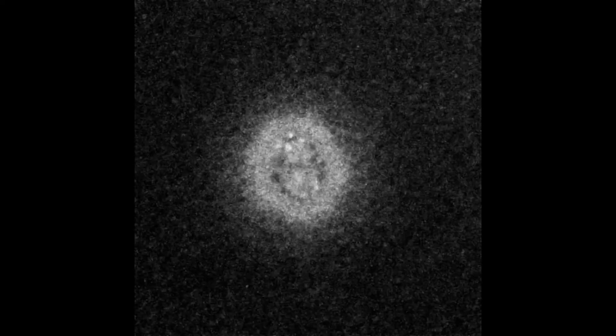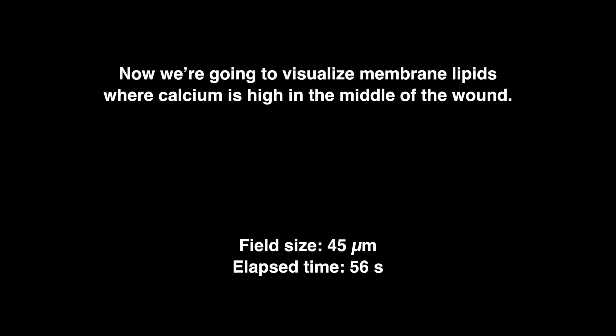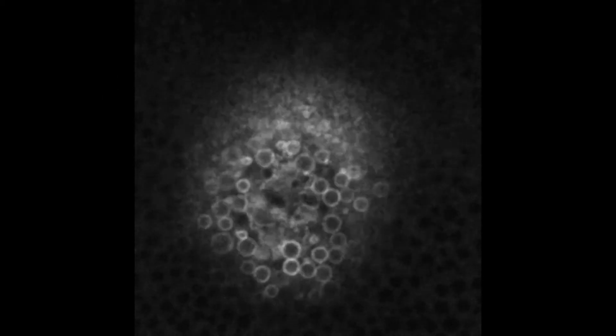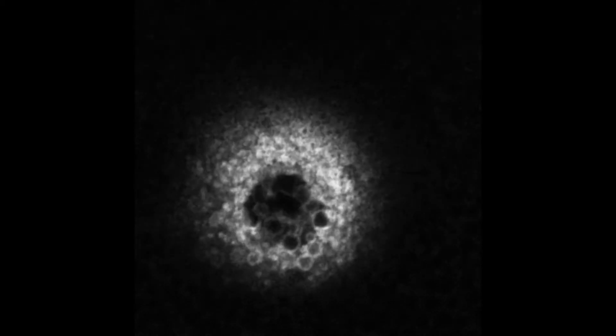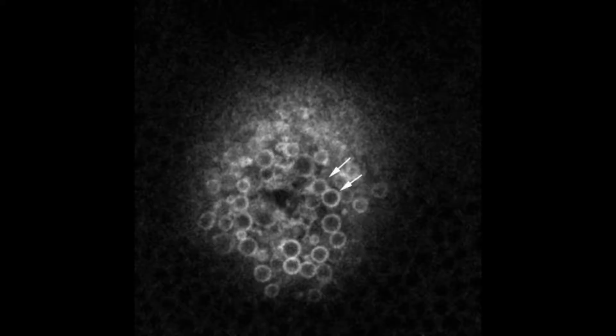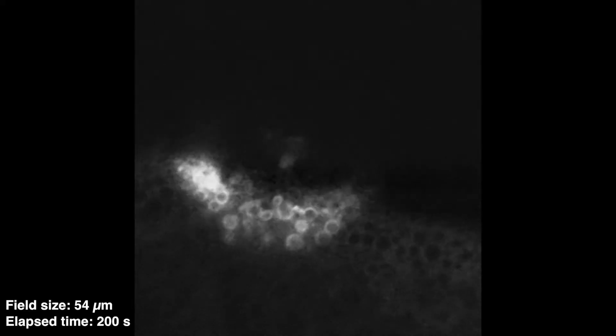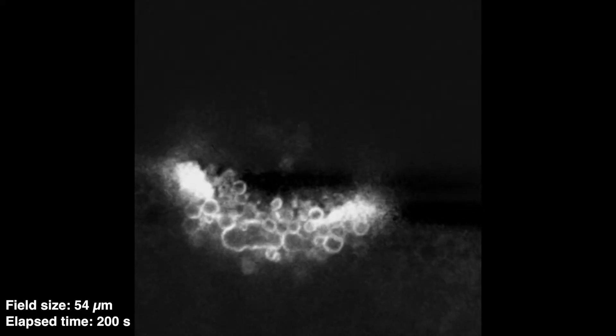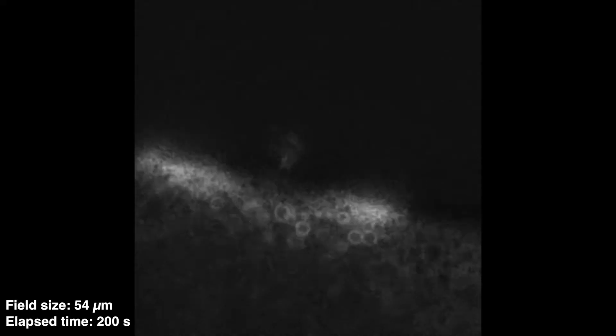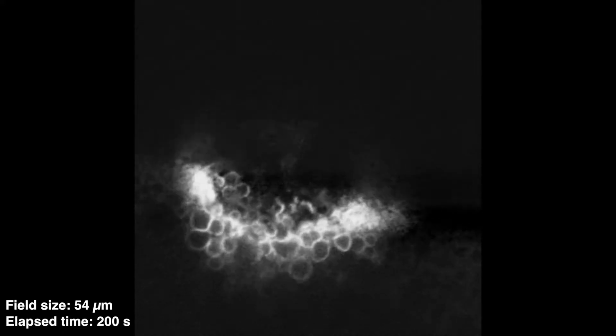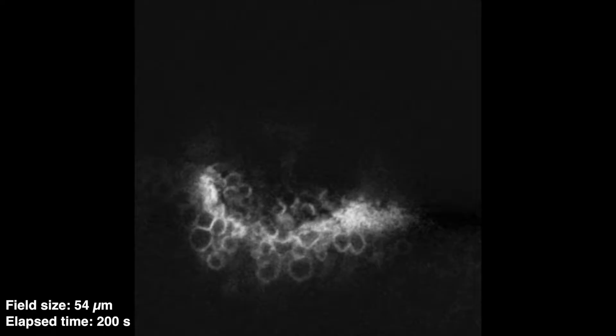Now we're going to visualize membrane lipids. Where calcium is high in the middle of the wound, it looked like vesicles were fusing with each other. Again we will slow the movie down and take a closer look — same experiment, but this time we will try an edge view. What we see is not simply a couple of vesicles fusing with each other; that was a mad orgy of fusion. We definitely want to take a closer look.